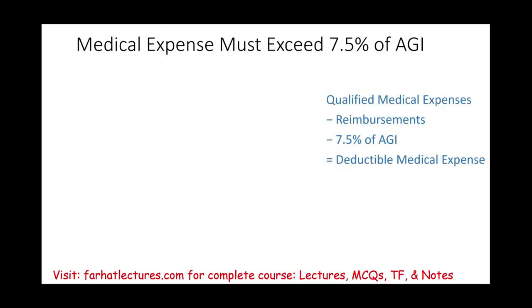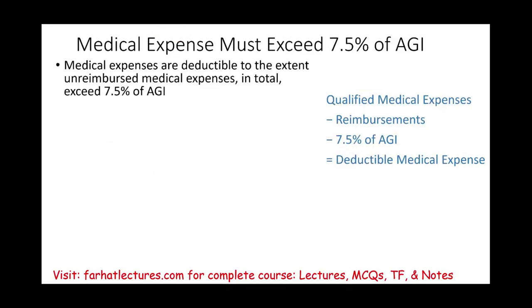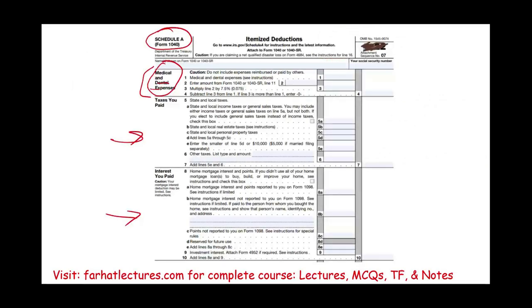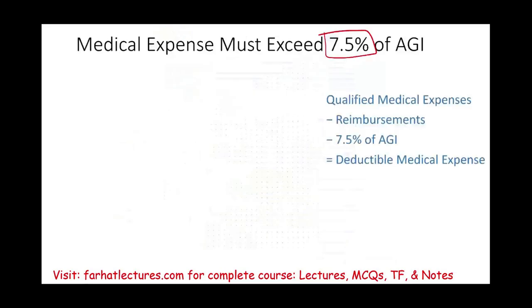For medical and dental expenses, the first thing to know is that to be deductible, they must exceed 7.5% of adjusted gross income. The form itself instructs you to multiply line 2 by 7.5%, so they have to exceed that threshold of your adjusted gross income.